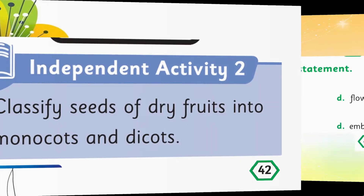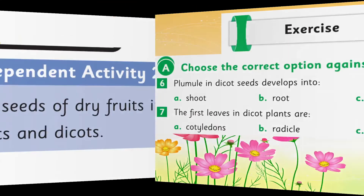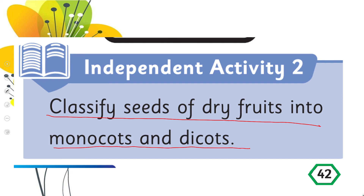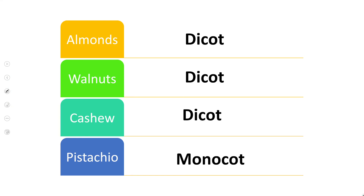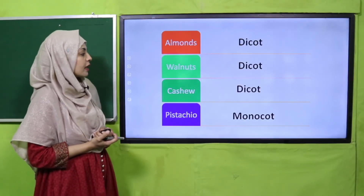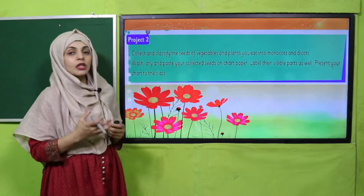The first leaves in dicot plants are the plumule. For independent activity number two on page 42: classify seeds of dry fruits into monocots and dicots. Almonds are dicots, walnuts are dicots, cashew nuts are dicots, and pistachio is a monocot.